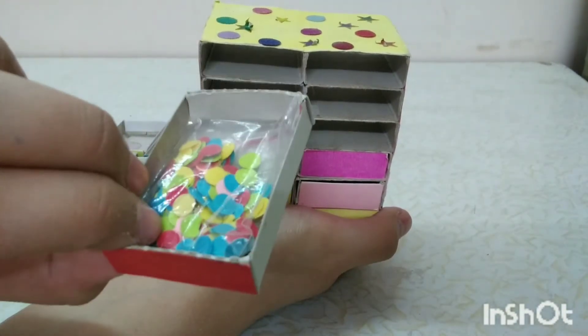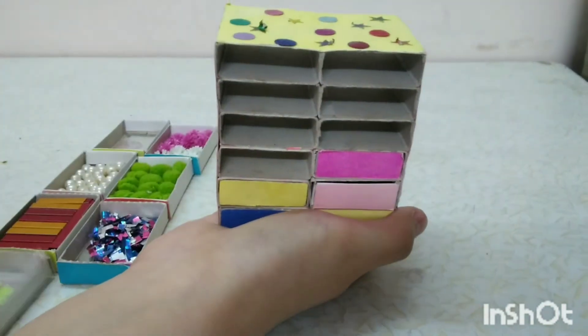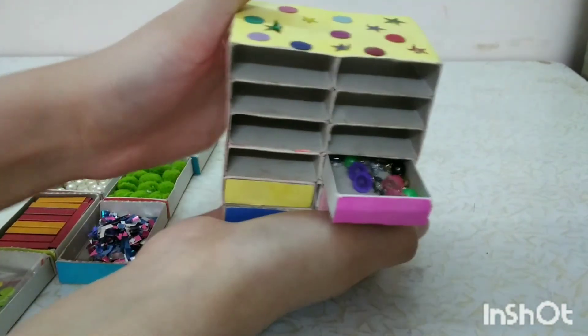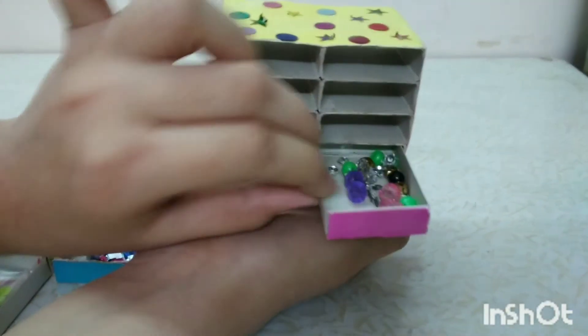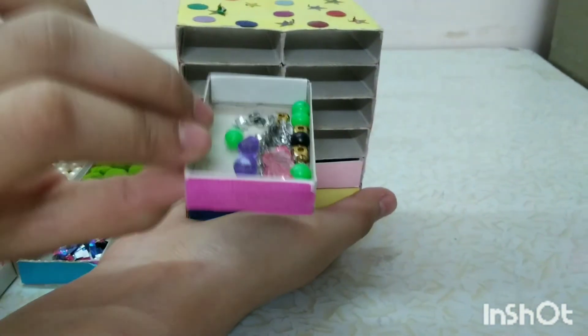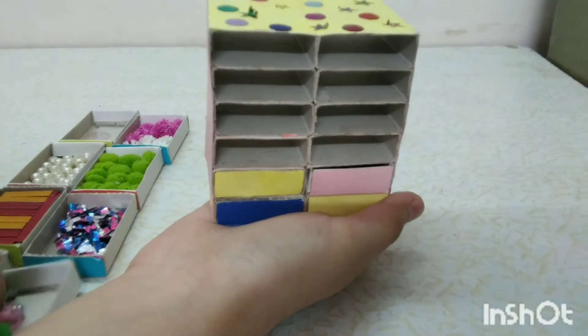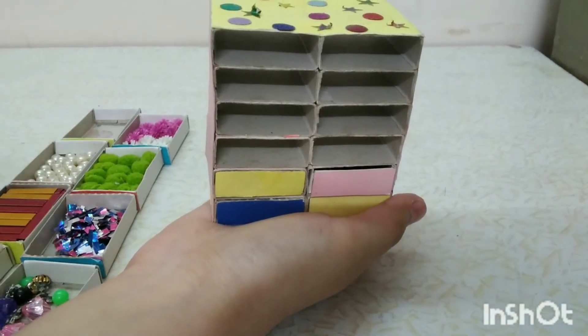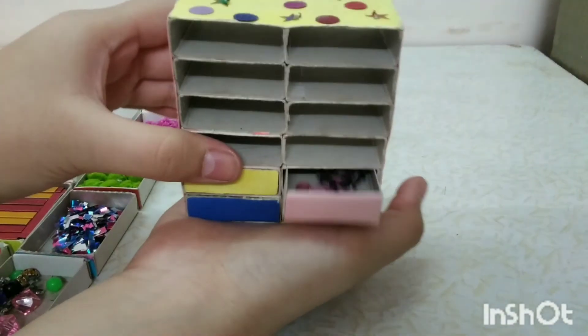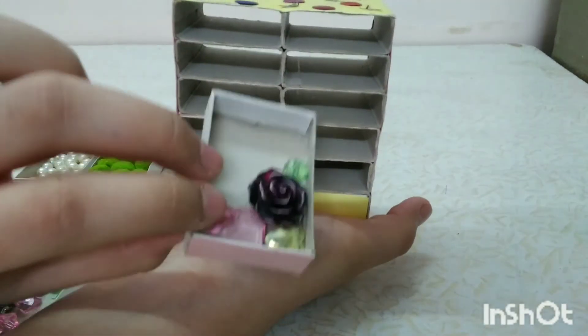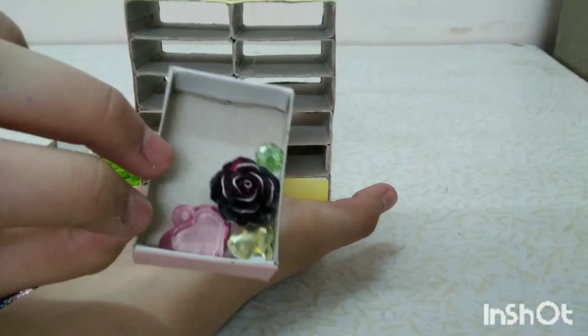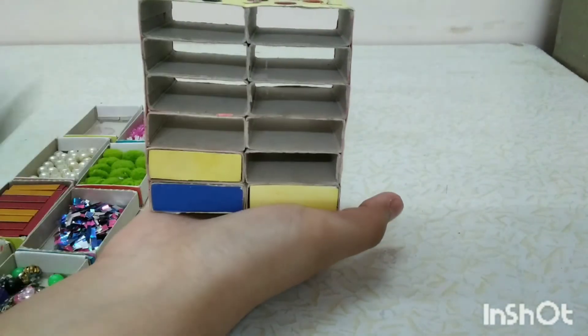Then I have some paper sparkles which are so colorful. In the next drawer I have some sparkles, beads, and a lot more. There are some giant decorative items which I have in this drawer.